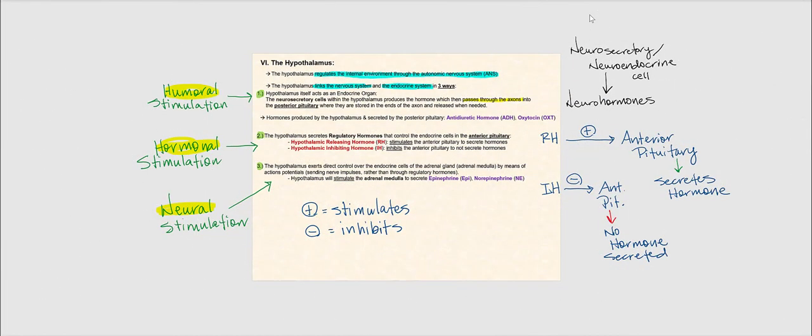The hypothalamus regulates the internal environment through the autonomic nervous system, or ANS. You can think of the hypothalamus as the boss or control center of the ANS. Furthermore, the hypothalamus will link the nervous system and the endocrine system in three ways.